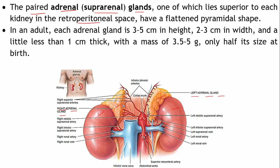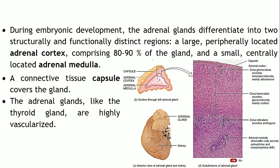Just as the kidneys are retroperitoneal — covered by peritoneum only on the anterior surface and located between the peritoneum and the posterior wall of the abdominal cavity — the adrenal glands are also retroperitoneal and have a flattened pyramidal shape. Their dimensions are three to five centimeters in height, two to three centimeters in width, and less than one centimeter in thickness.